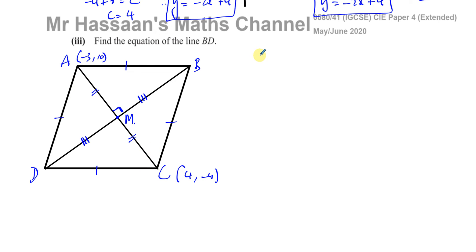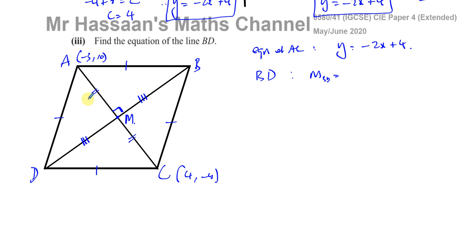We know the equation of line AC is y = -2x + 4. The gradient of BD will be the negative reciprocal of the gradient of AC, because when two lines are perpendicular their gradients are negative reciprocals. The gradient of AC is -2, which is -2/1. Changing the sign and flipping gives +1/2. So the gradient of BD is 1/2.